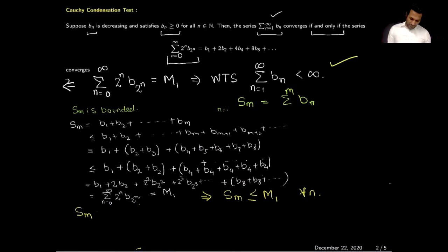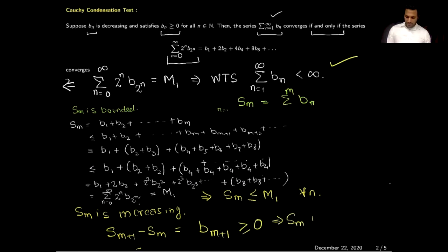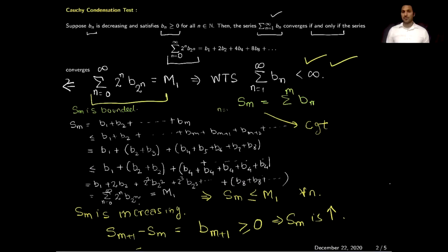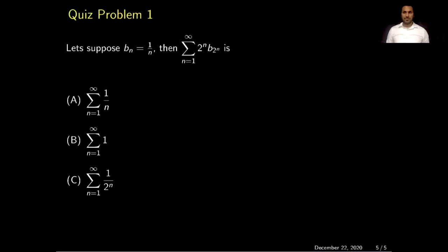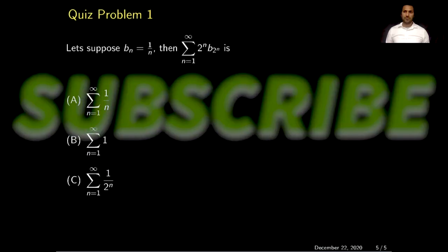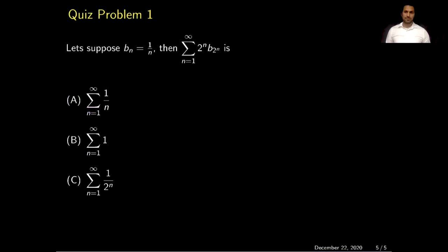To prove S_m is increasing, we compute S_{m+1} minus S_m = B_{m+1}, which is greater than or equal to zero since each term is positive. Therefore S_m is an increasing sequence. Since S_m is increasing and bounded above, it is convergent, which implies the series summation of B_n is also convergent. This completes the proof of both directions. Here is one quiz problem for you to practice — please pause the video for a minute or two. Thank you for watching; I will see you in the next video.